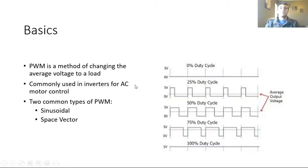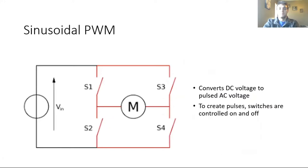PWM is commonly used in inverters for AC motor control. And there are two common types of pulse width modulation schemes being sinusoidal pulse width modulation and space vector pulse width modulation.